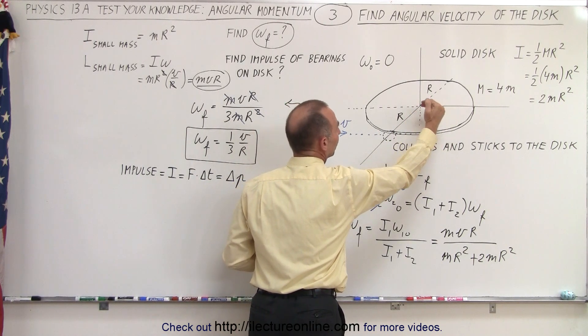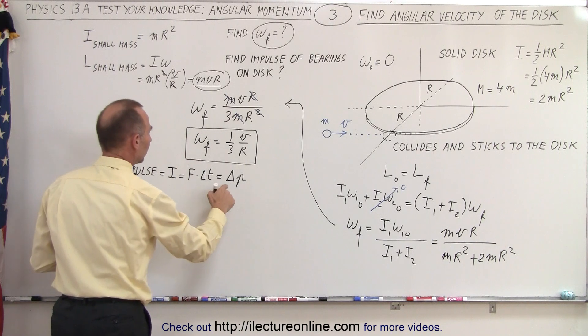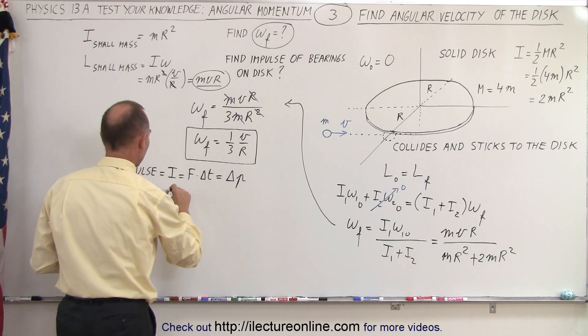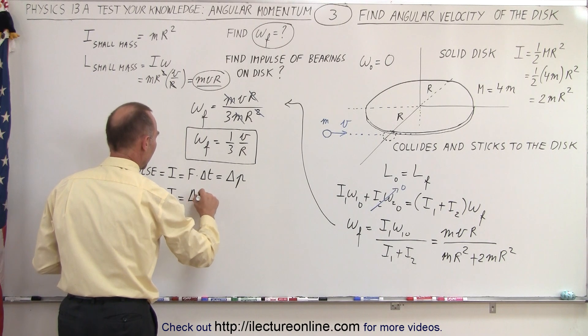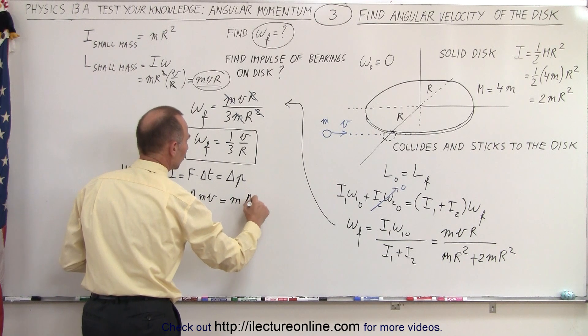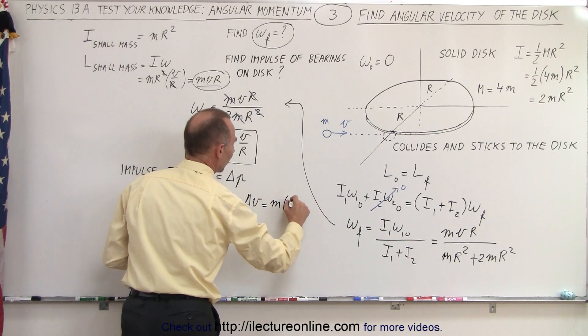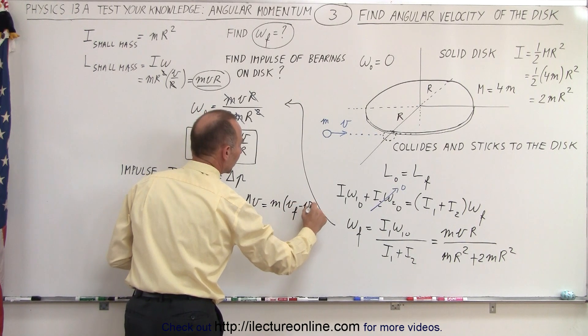In this case, we're going to make it the change of linear momentum because the impulse over here will be reciprocated by the impulse of the bearings back onto the disc. So in this case, Δp means that impulse equals Δmv, and if the mass doesn't change, that means m times the change in velocity, which equals m times (v_final - v_initial).